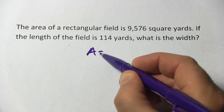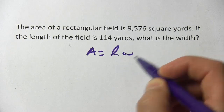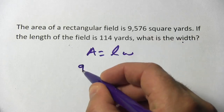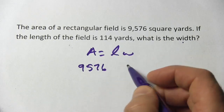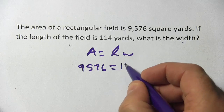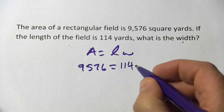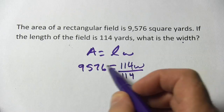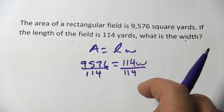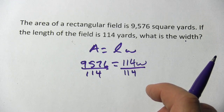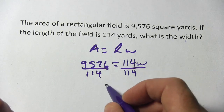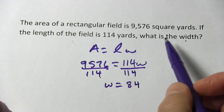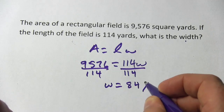We know that area is length times width. I'm just going to plug the numbers I have into this formula and solve for width. The total area is 9,576. We know our length is 114, so put that in for L, and then times W. To solve this, all we need to do is divide both sides by 114. I'll pull out my calculator for this one, and I get W equals 84 yards.